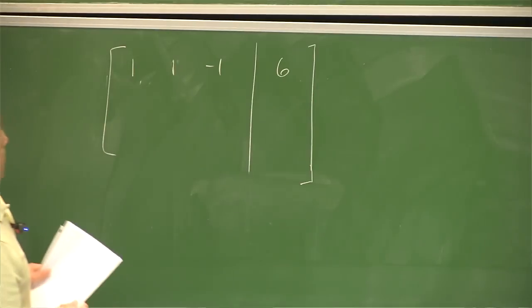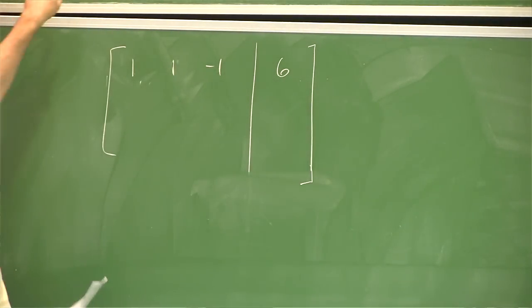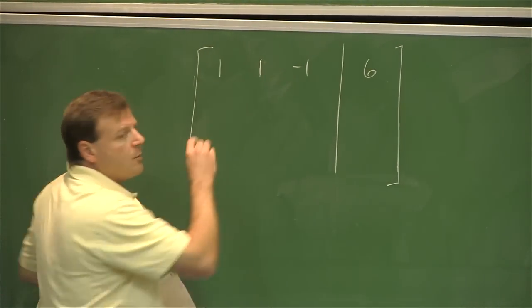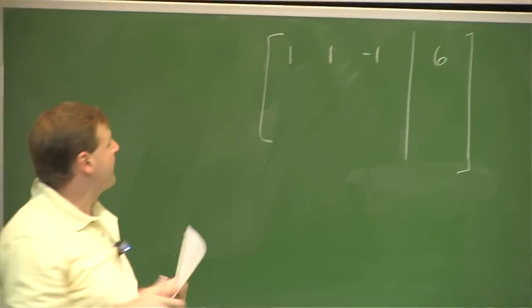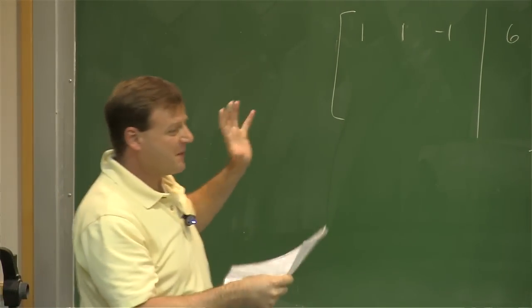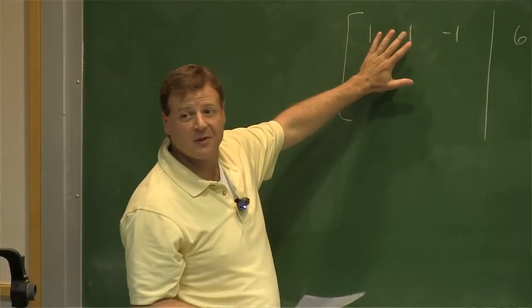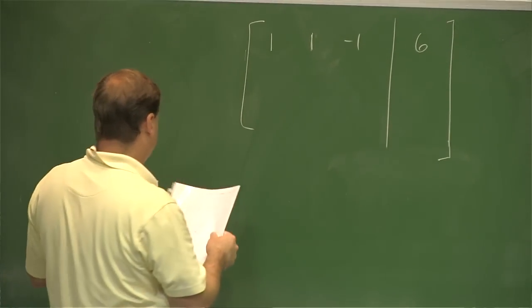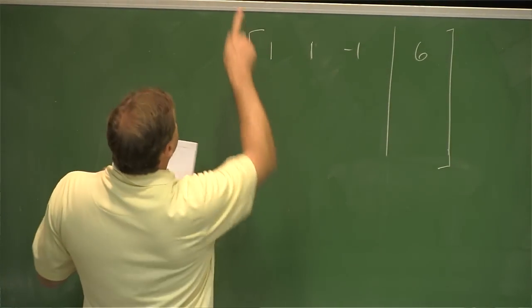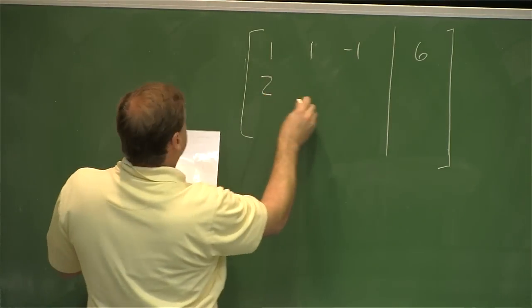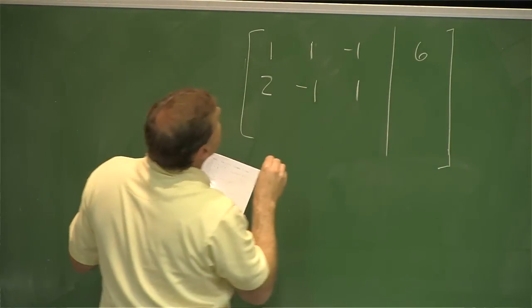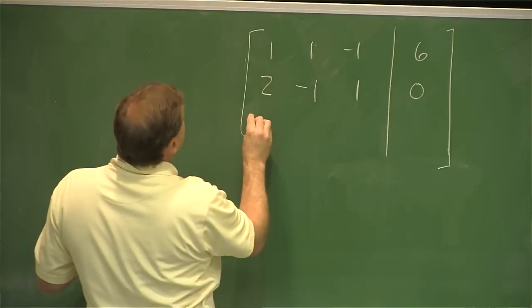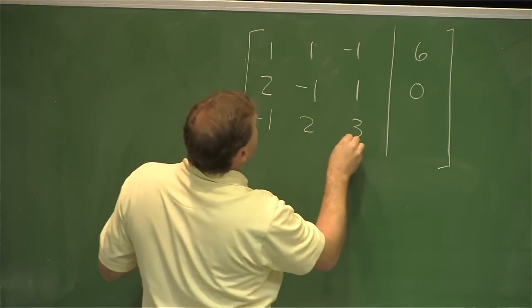So what's a matrix? A matrix is a big rectangular blob of numbers. I'm going to take all the important information. In front of the x there's a 1 in the upper left-hand corner, and I go across the first equation to create the first row: 1, 1, negative 1. Then a line to indicate the equal sign. The second equation gives me 2, negative 1, 1, and 0. The third equation gives me negative 1, 2, 3, 1.